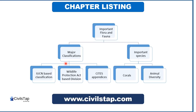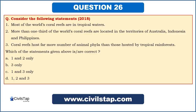Now we will talk about the second part — important flora and fauna, divided into corals and plant and animal diversity. The first question related to corals: consider the following statements — first, most of the world's coral reefs are in tropical waters; second, more than one-third of the world's coral reefs are located in territories of Australia, Indonesia, and Philippines; third, coral reefs host far more number of animal phyla than those hosted by tropical rainforests.